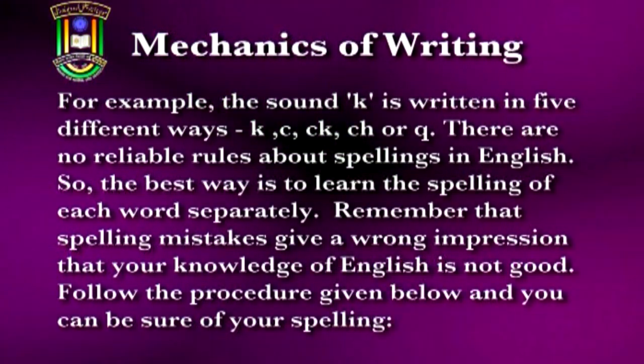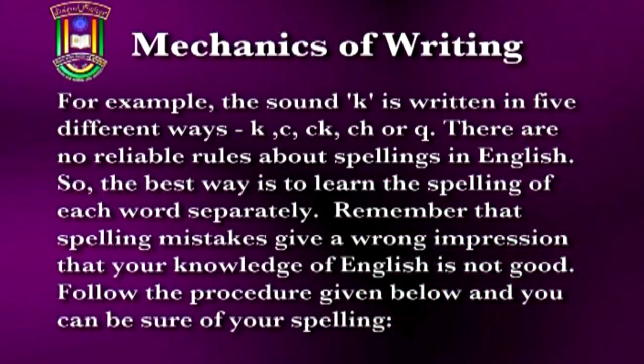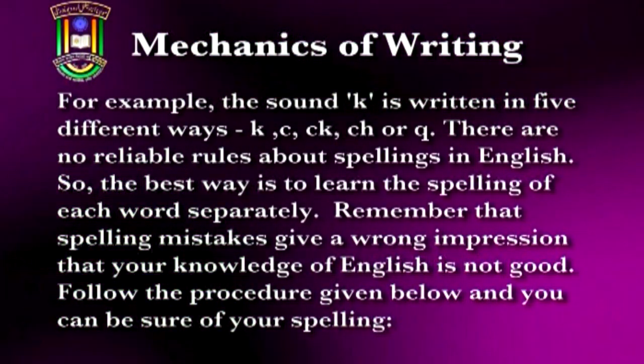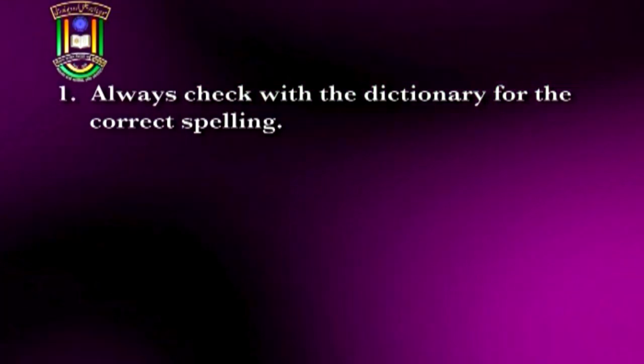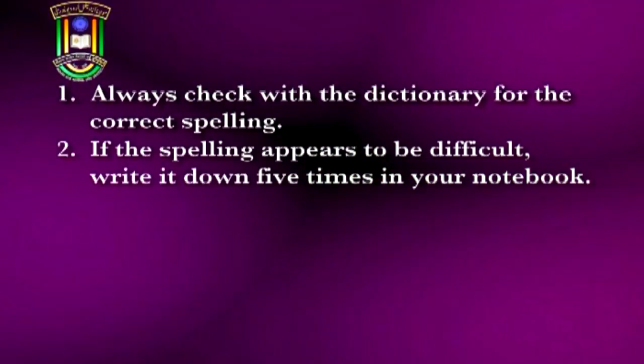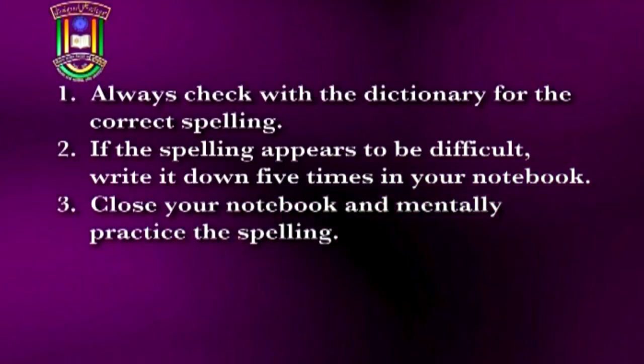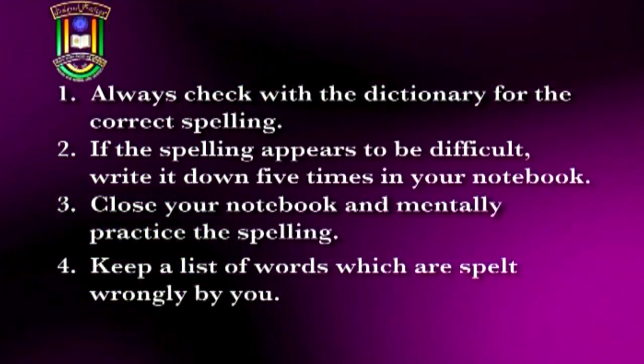There are no reliable rules about spelling in English. The best way is to learn the spelling of each word separately. Remember that spelling mistakes give a wrong impression that your knowledge of English is not so good. Always check with the dictionary for the correct spelling. If the spelling appears difficult, write it down five times in your notebook. Then close your notebook and mentally practice the spelling. Keep a list of words you spell wrongly. Remember that some spellings are different in American English. Spelling is primarily habit — you have to make correct spelling an automatic habit. Since memory plays an important part in spelling, you should develop visual memory. Try to get a mental picture of the word, write it down from memory, check the spelling, and if it is wrong, repeat the process until you get it right.